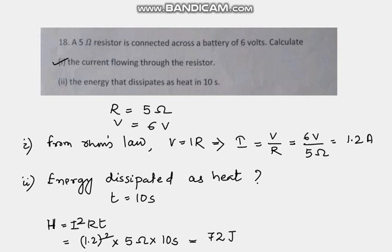And the current flowing in the conductor is 1.2 ampere. So this is the solution. Thanks for watching.